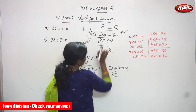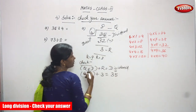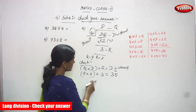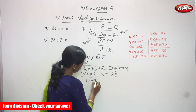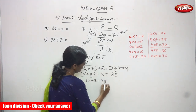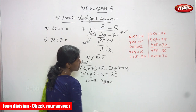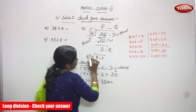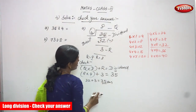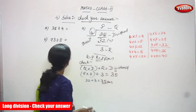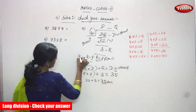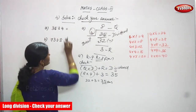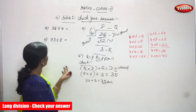That means your answer — whatever quotient and remainder you found — is exactly right. So 8 into 4 is 32, and 32 plus 3 gives you 35, which is the dividend. So the answer is: quotient is 8 and remainder is 3. That is the right answer for this question.